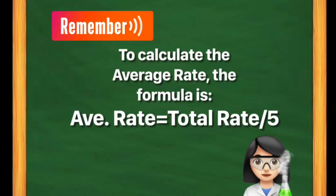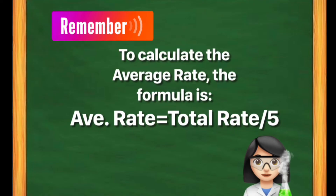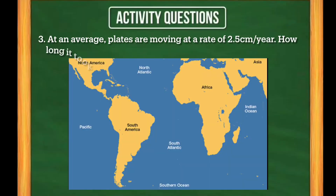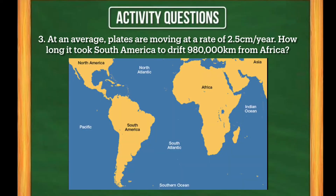Remember to calculate the average rate: the formula is average rate is equal to total rate of movement divided by five. Activity Question 2: What is the average rate of movement of plates on both sides? Activity Question 3: At an average, plates are moving at a rate of 2.5 centimeters per year — how long did it take South America to drift 980 kilometers from Africa?